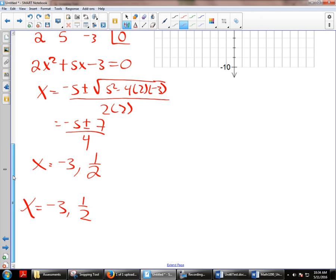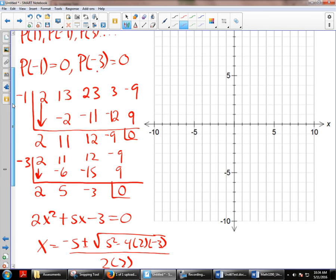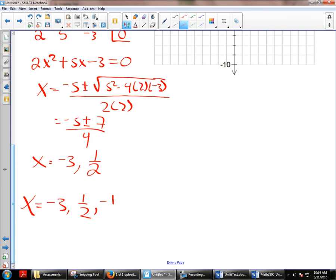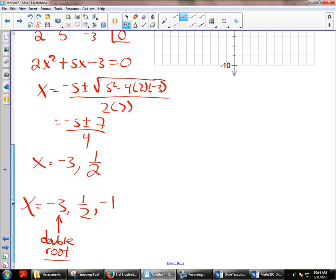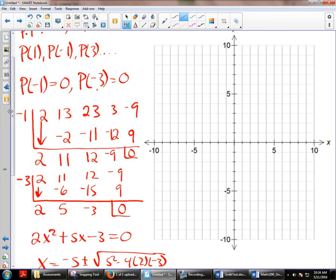So my x-intercepts turn out to be negative 3, 1 half, and what's my other one? Negative 1. So because negative 3 showed up twice, that is a double root. So what that means for graphing purposes is not double roots, double root. I bounce off the x-axis. So let me just plot these now. Negative 3, 1 half, negative 1. So negative 3, 1 half, and negative 1.